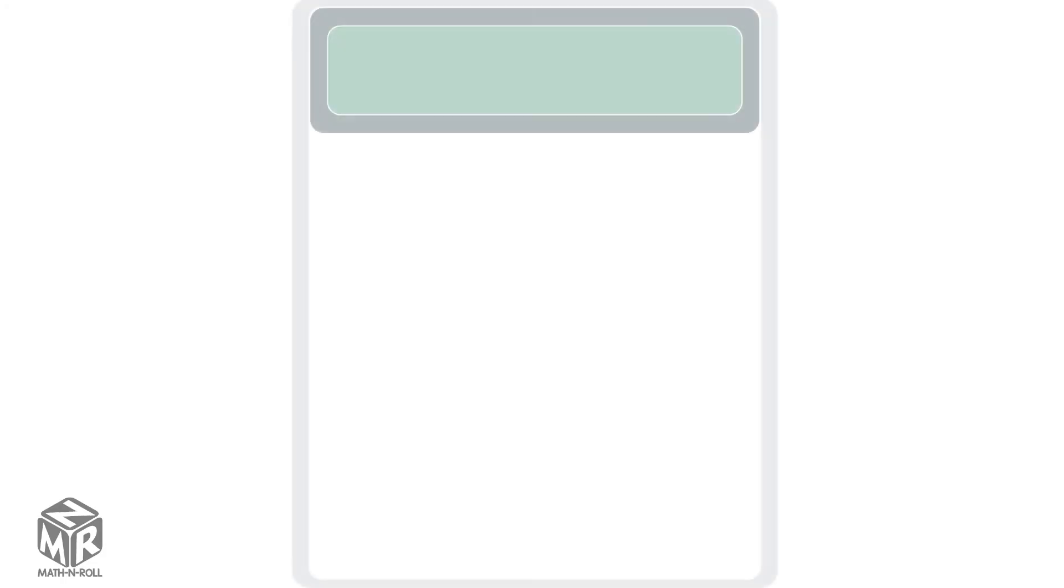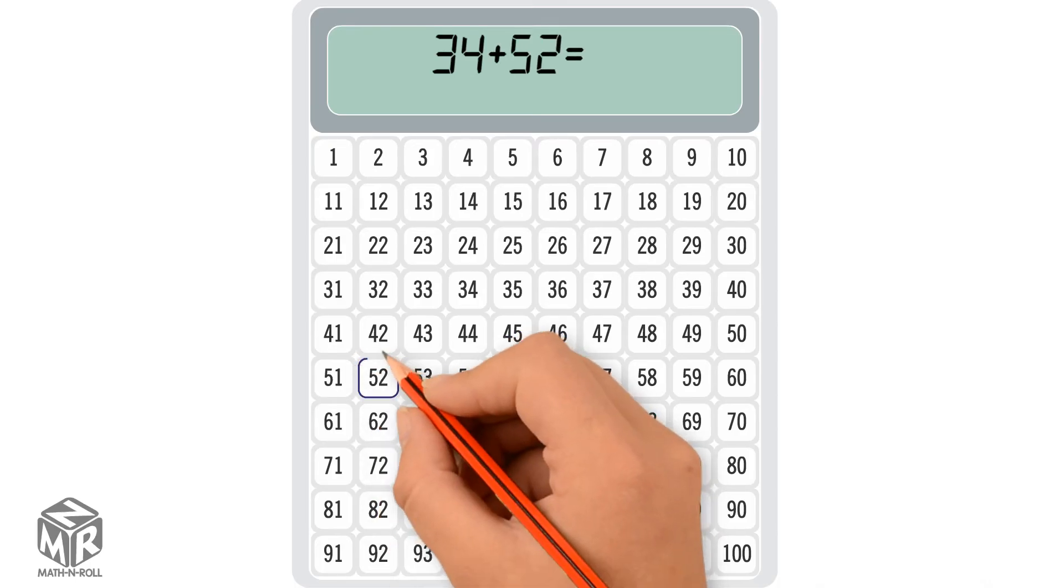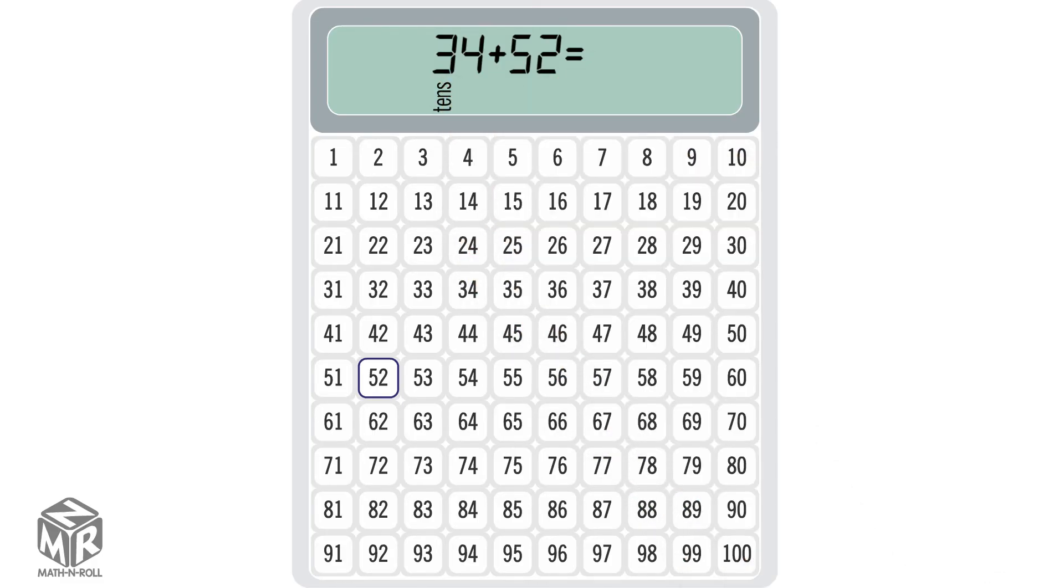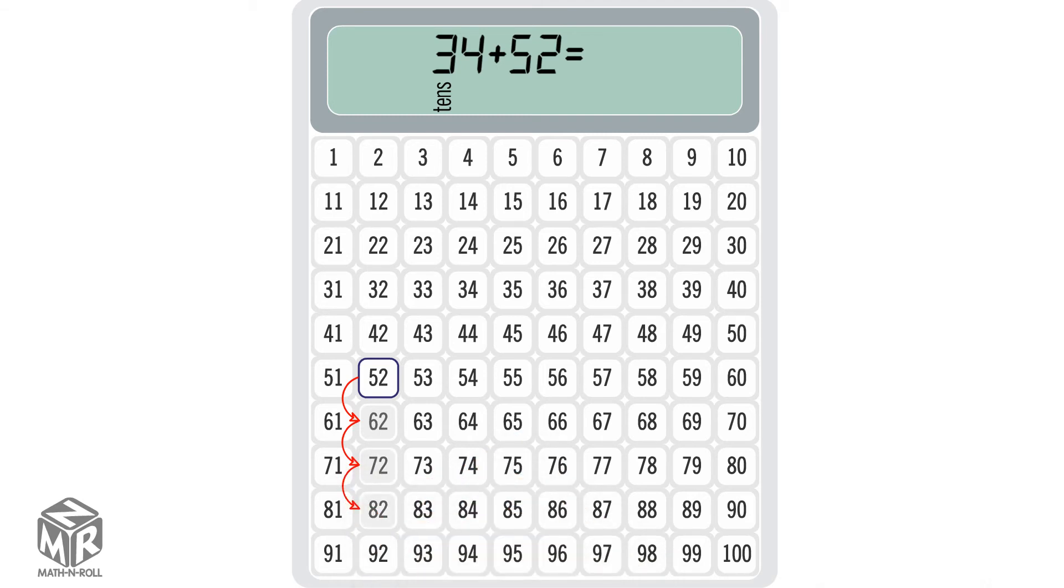Let's try another one. 34 plus 52. We start with the bigger addend, 52. 34 has 3 tens, so we start at 52 and count 3 tens going down the column. We pause at 82.